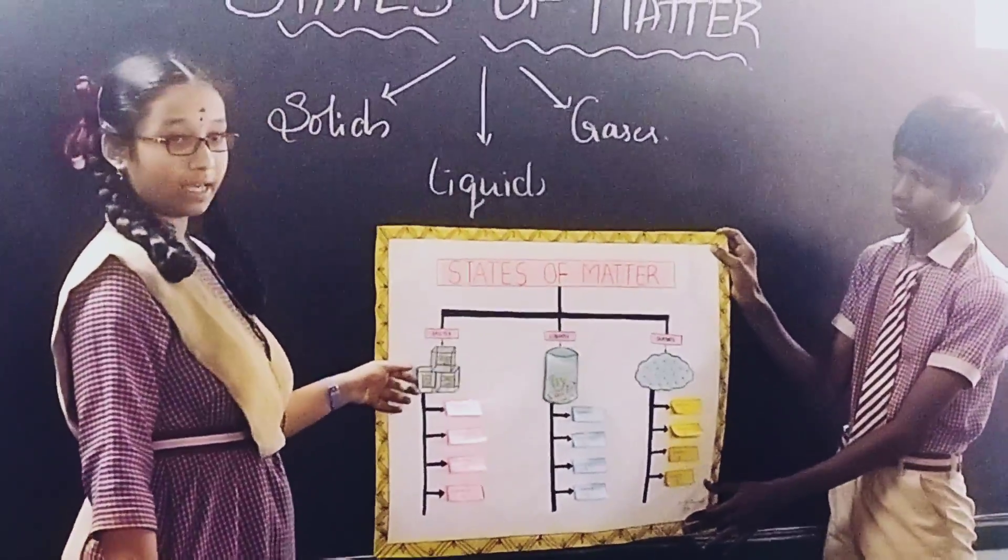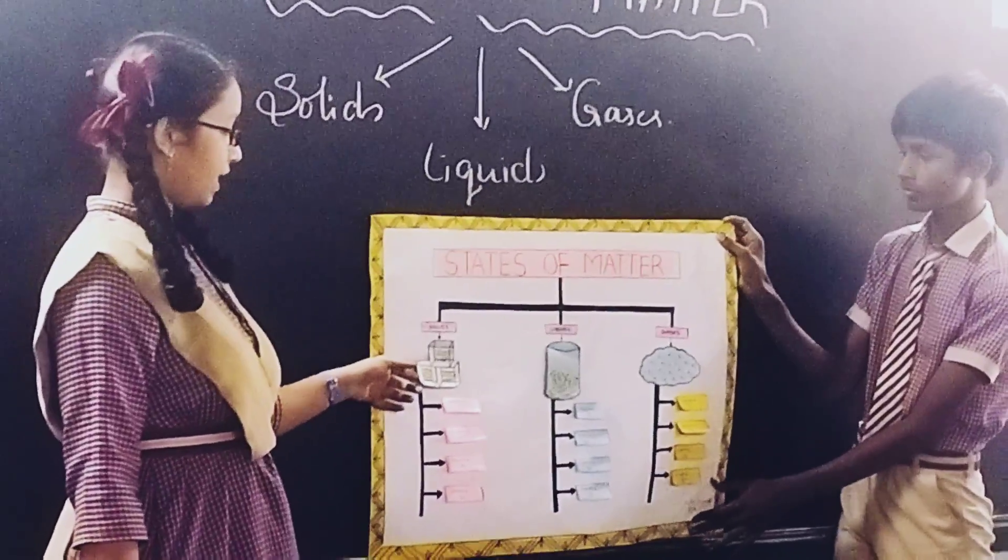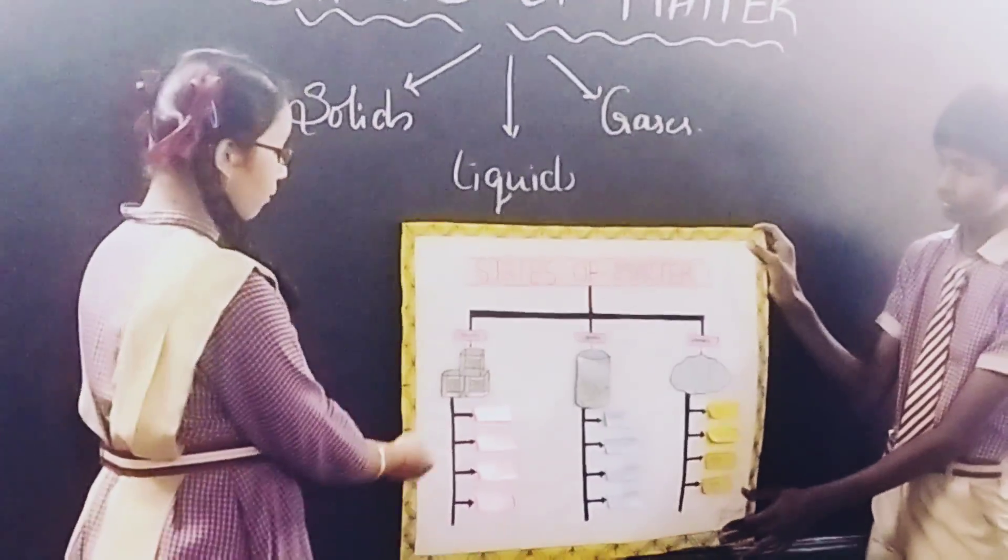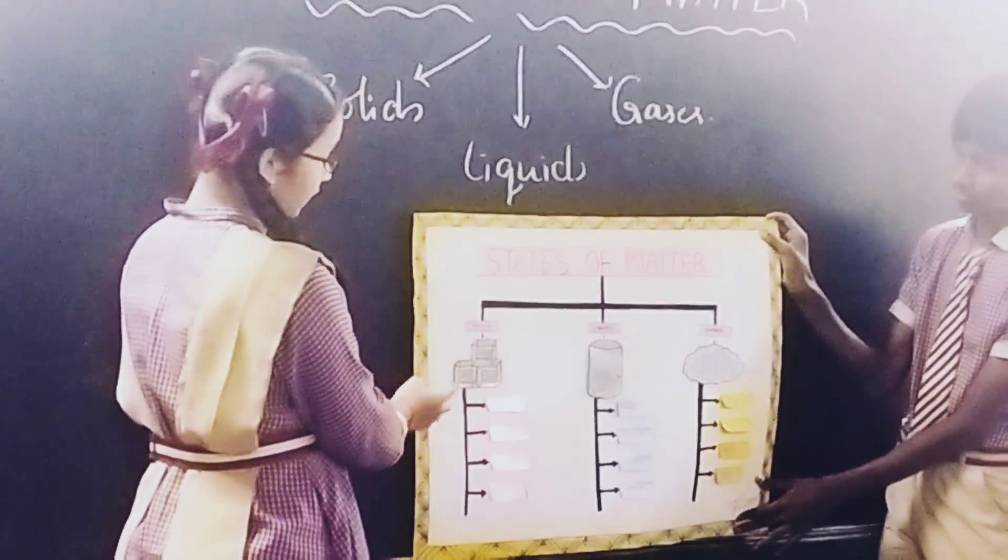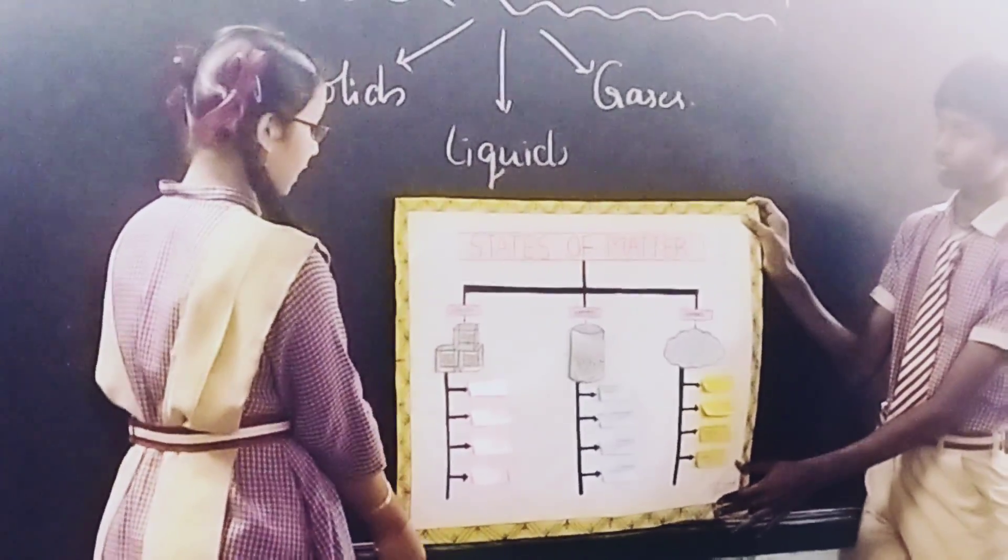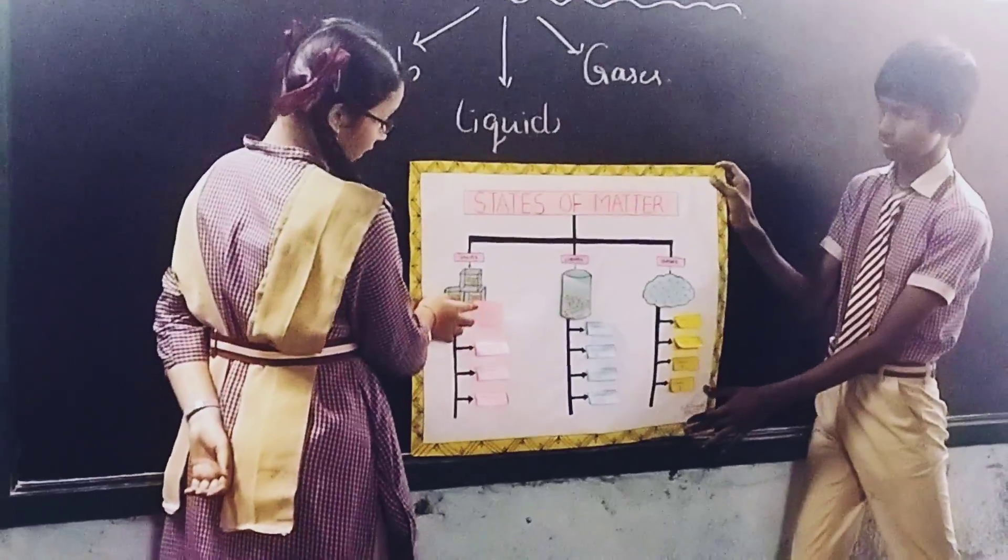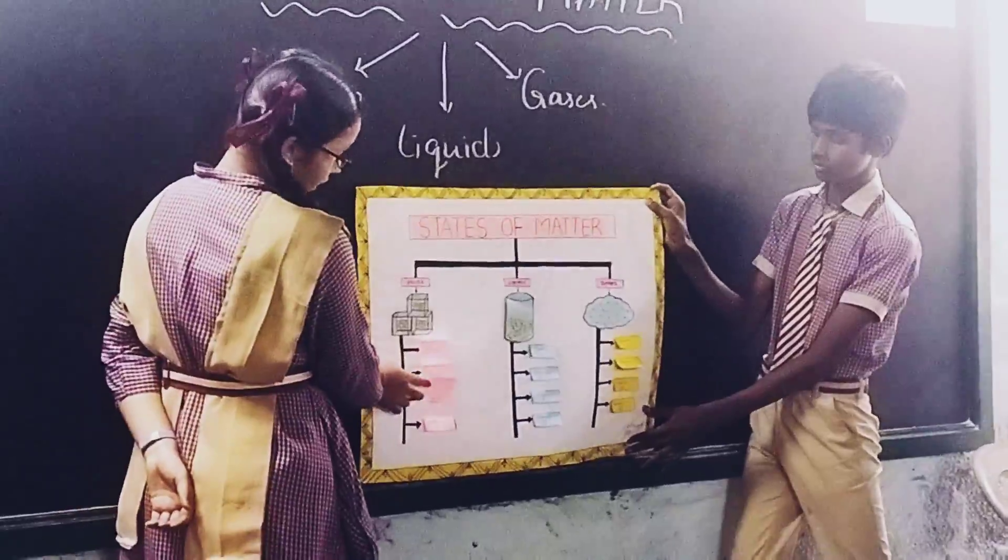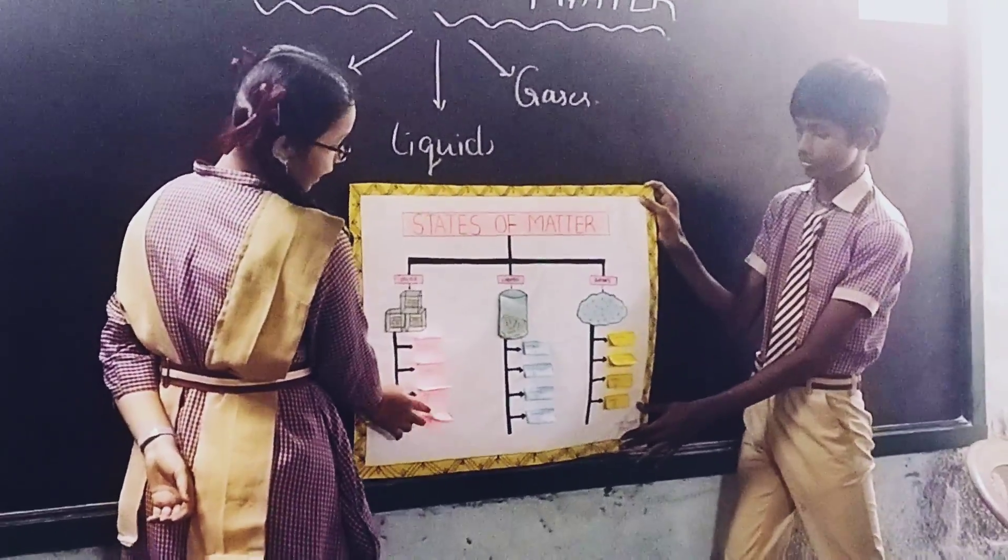Solids have a definite shape and fixed volume, and molecular arrangement in solids is very close to each other. Examples for solids are plastic, sugar, drink, iron, etc.